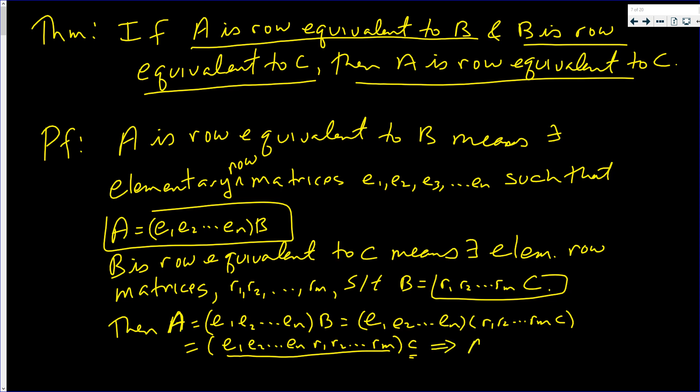This implies that A is row equivalent to C by definition. All I did was use definitions. Knowing your definitions can make their proofs much, much easier. This completes this proof.